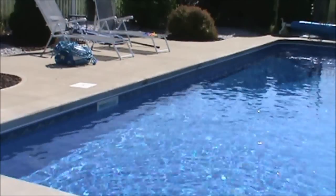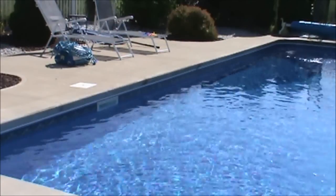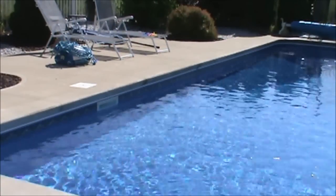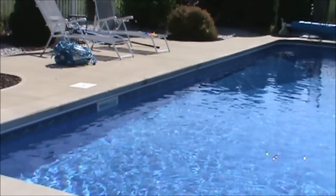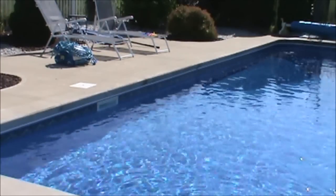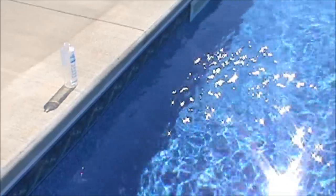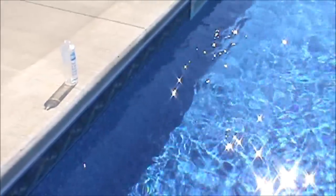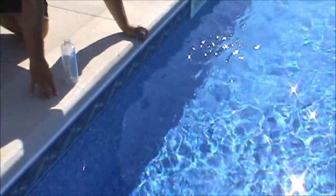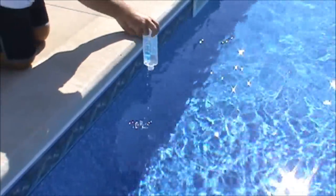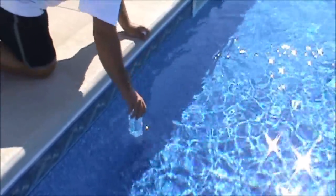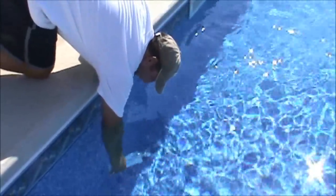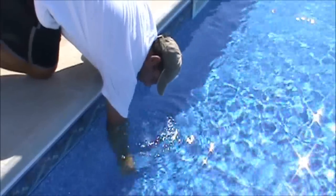The first thing you want to do when you test your water is get a good sample. You're going to notice that I put my arm deep in the water, staying away from my returns. You want to take your bottle and flip it upside down and form an airlock. Dip the bottle all the way down in the pool as deep as you can go.